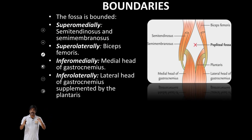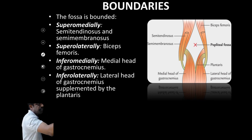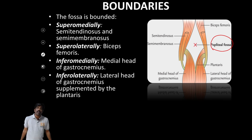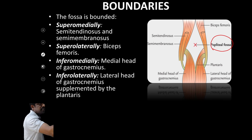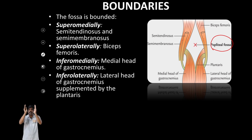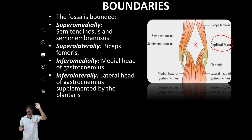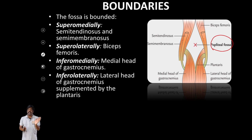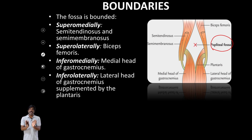Because it's a diamond shape, it has four boundaries: superomedial, superolateral, inferomedial, and inferolateral — four boundaries.